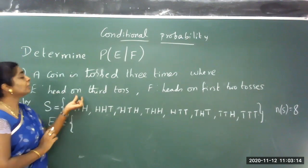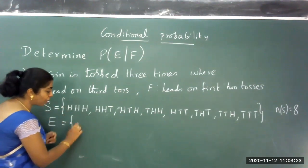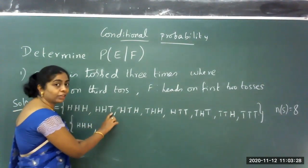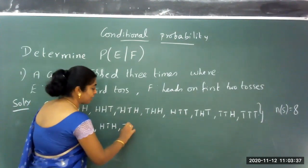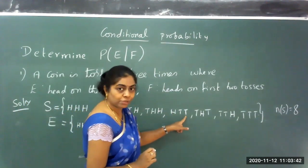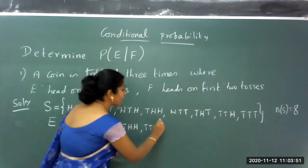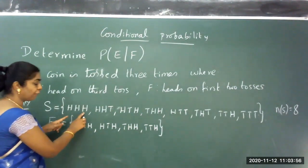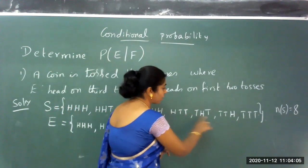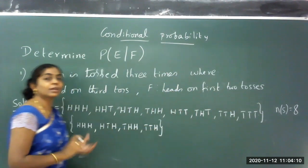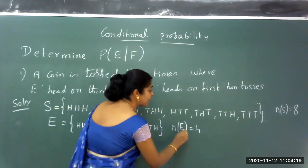What is event E? E is a head on the third toss. Let me see what cases give a head on the third toss. I can consider HHH — third one has head. Then HTH — third one has head. Then THH — third one has head. And TTH — third one has head. Out of 8, there are four chances where I get the third one showing head. So the number of elements in event E is 4.